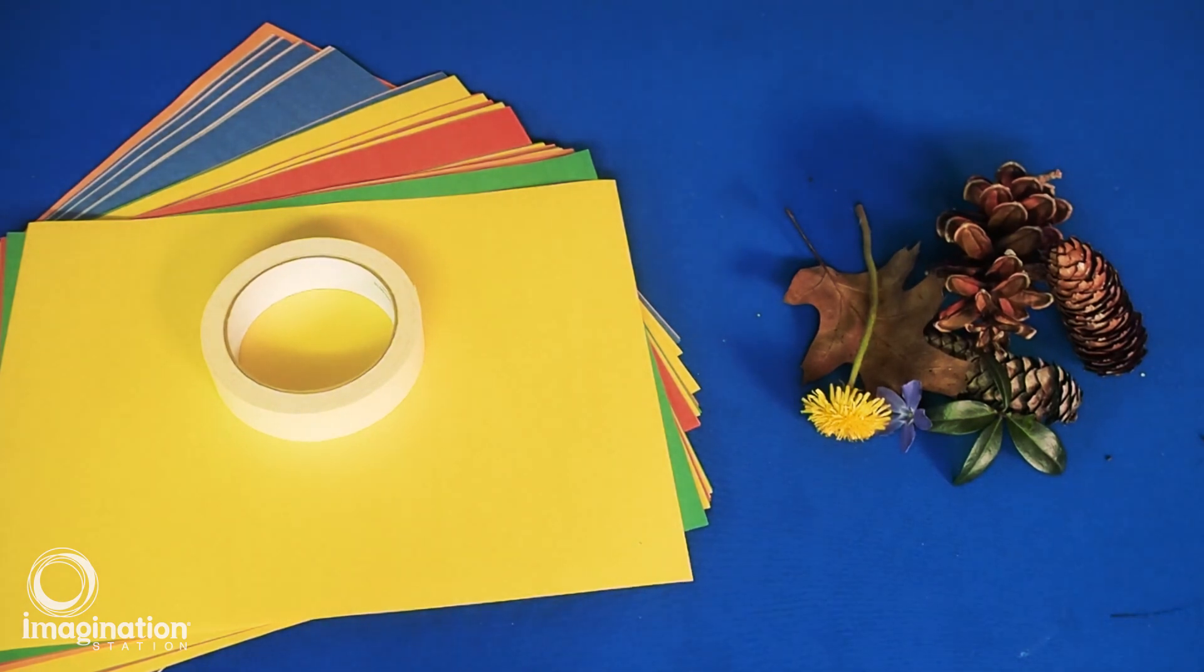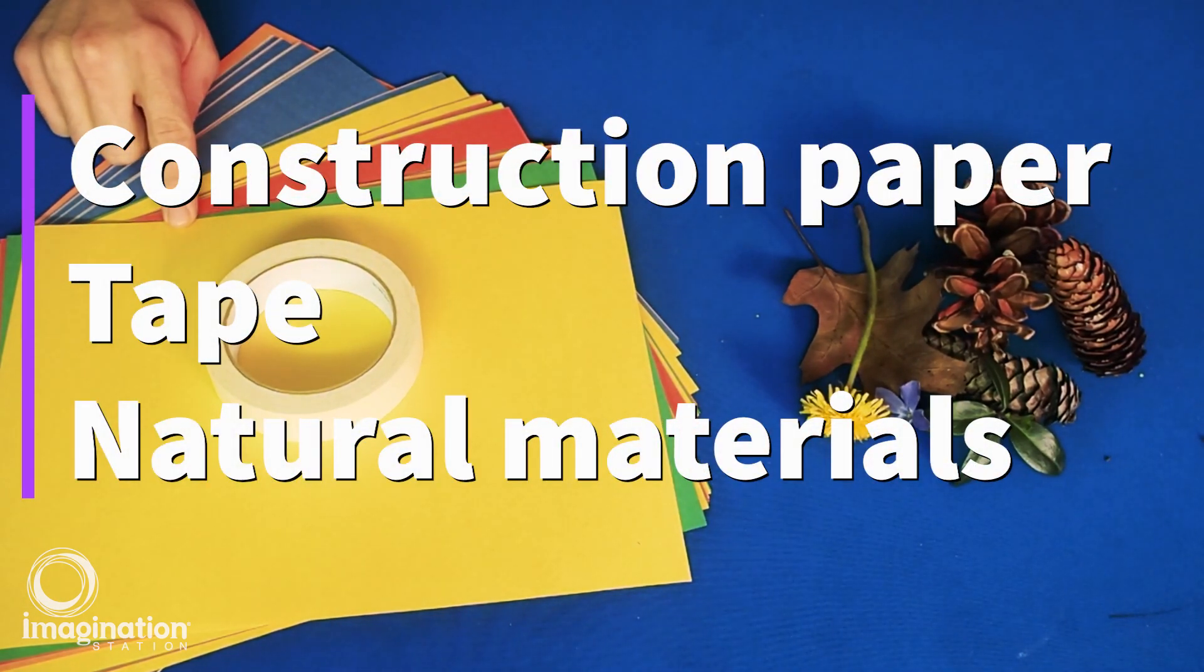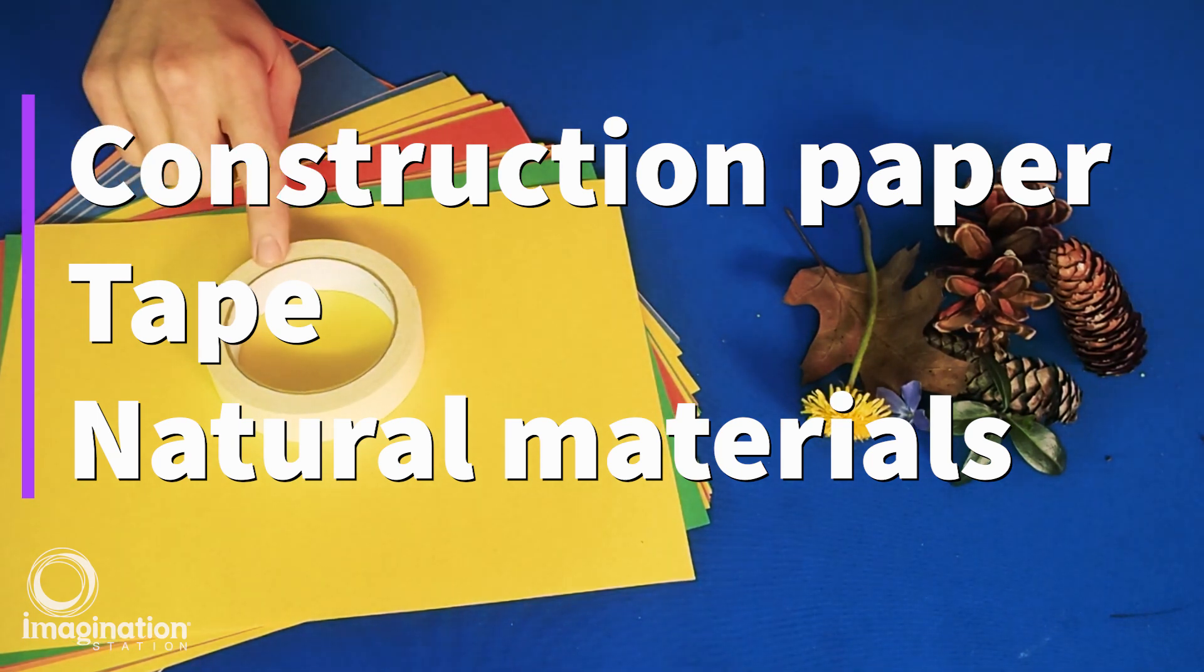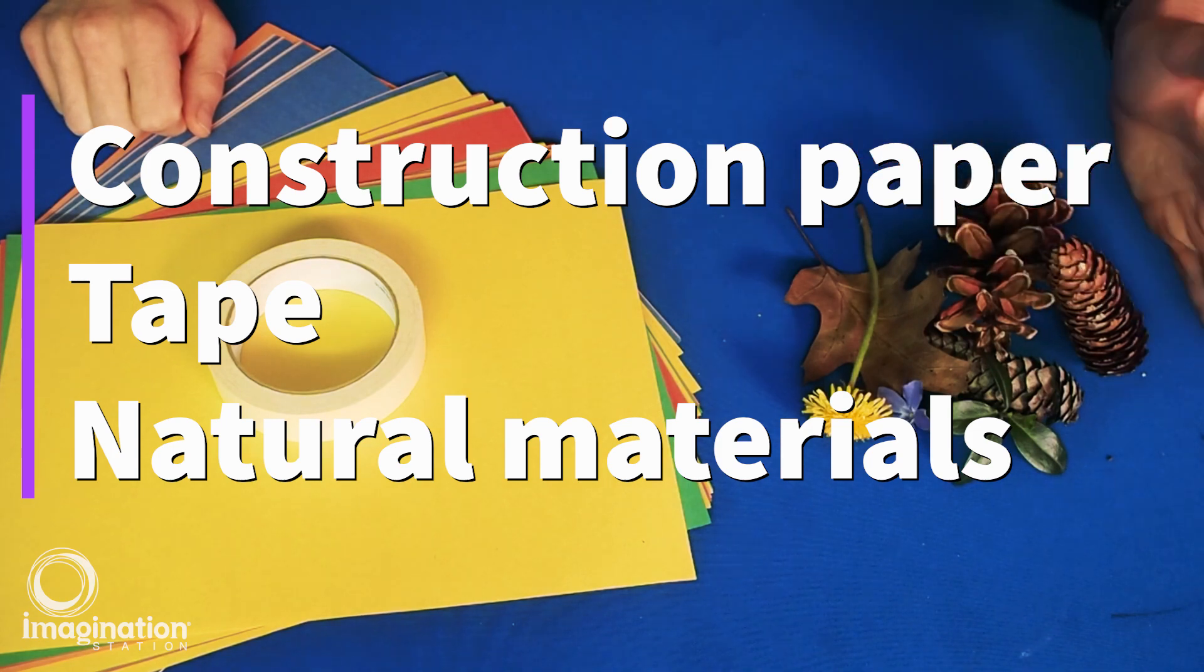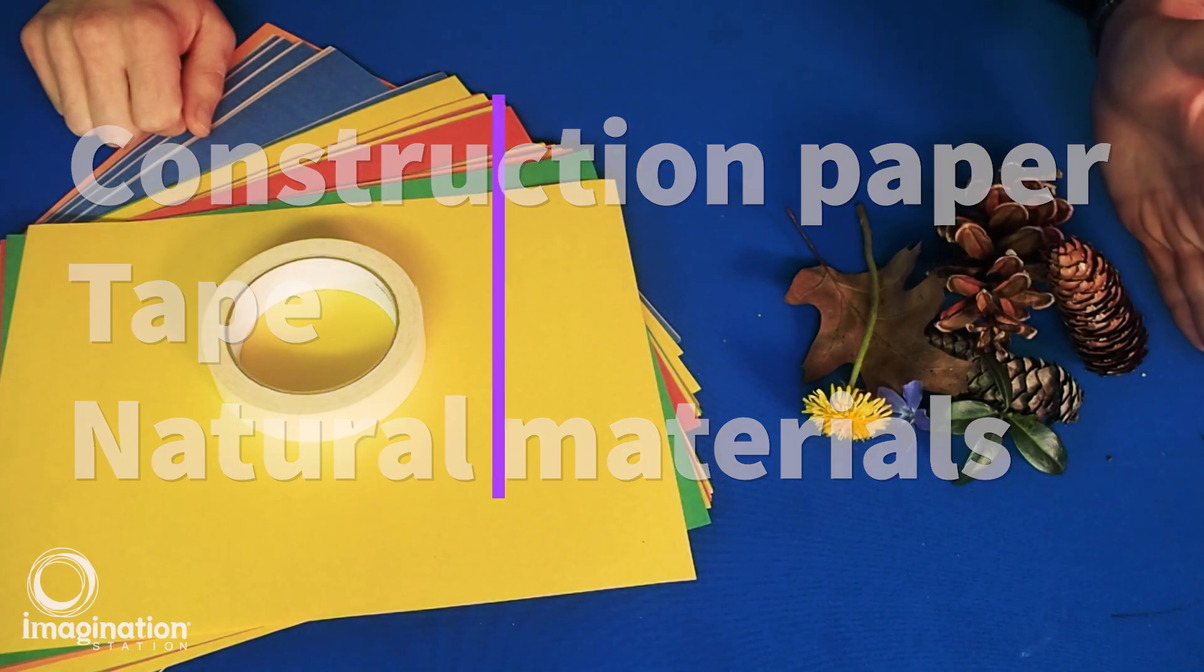The supplies you'll need for sun prints are construction paper. You can try out different colors to see which one works best, tape, and leaves, flowers, and other natural items that you can find outside.